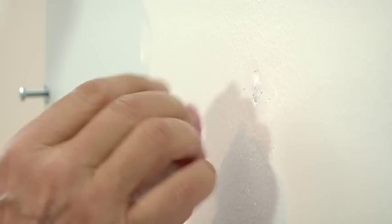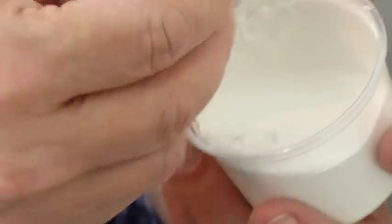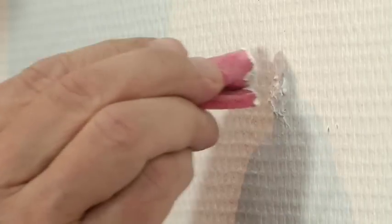It's very important that you let the putty dry before you paint. When the putty is dry, you apply the paint with, for example, a cloth. Then you let it dry and paint again.